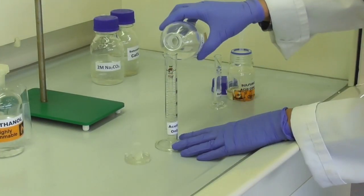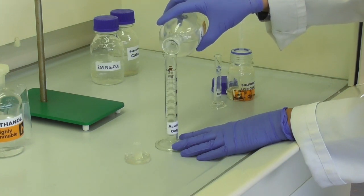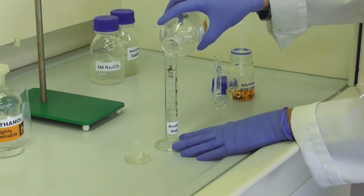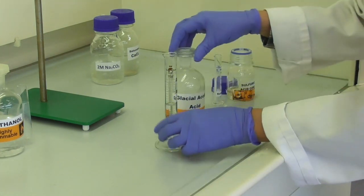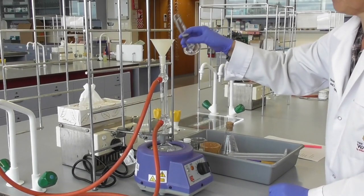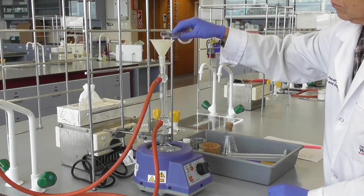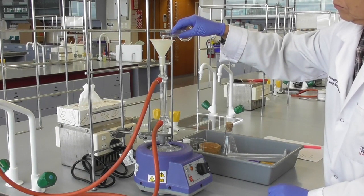Again in the fume hood, we measure out the second reagent, which is 15ml of glacial acetic acid. We take this to the apparatus and add it into the flask through the condenser.